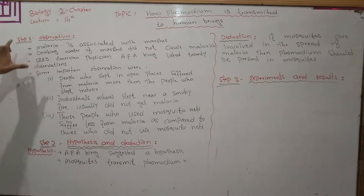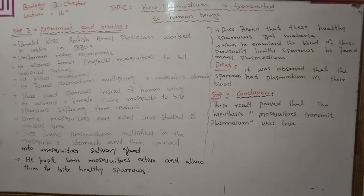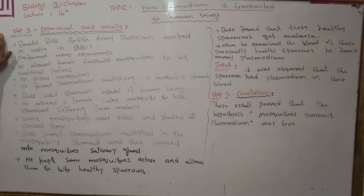So the steps so far are: first, observations; second, hypothesis and deduction. The next step is the third: experiments and results.